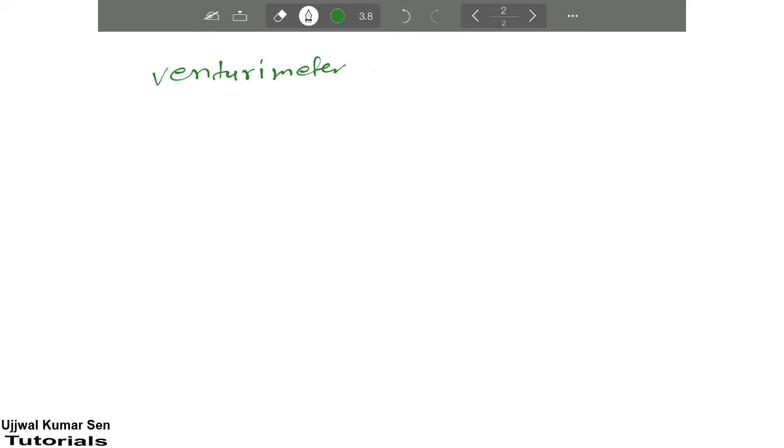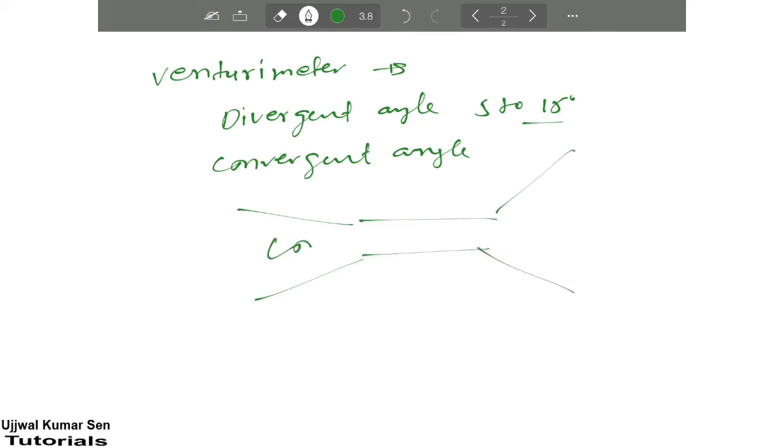If we talk about divergent angle, then it is varying from 5 to 15 degrees. We'll talk about convergent angle—if you're not getting divergent and convergent, this is known as convergent angle and this is known as divergent angle.